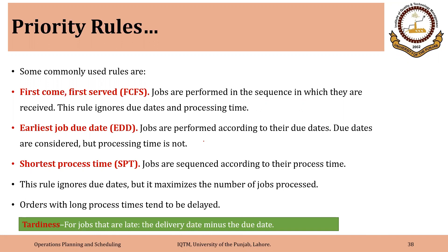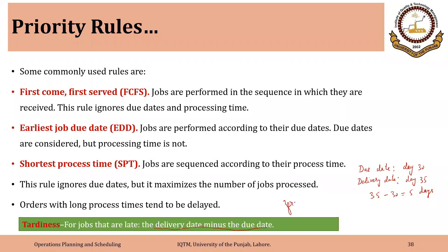There is a term related to these rules called tardiness. For jobs that are late, tardiness equals the delivery date minus the due date. For example, if the due date was day 30 and the completion date is day 35, the tardiness will be 35 minus 30, which equals five days. Tardiness is only used for late jobs. For jobs that are on time, tardiness will be zero or negative, which simply means the job is on schedule.